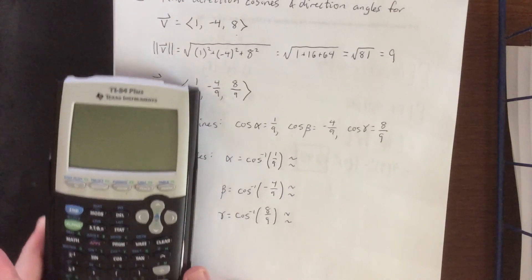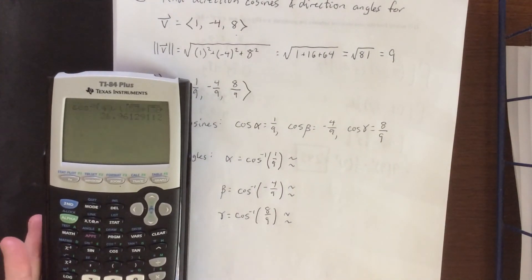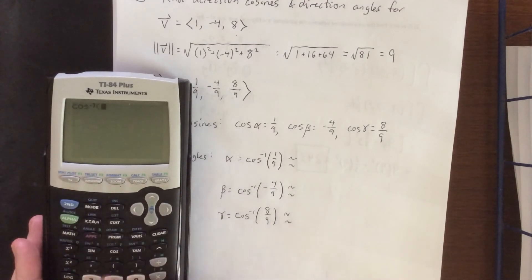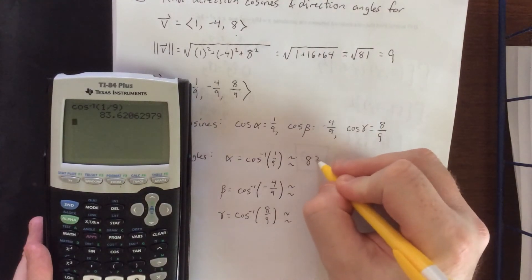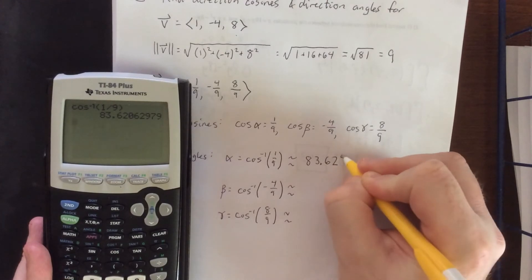Our graphing calculator is still in degree mode from last time. Arc cosine of 1/9, given that it's pretty close to zero, I'm expecting something close to 90 degrees. Not too shabby. We'll round this off to two decimal places like we did for the last one.